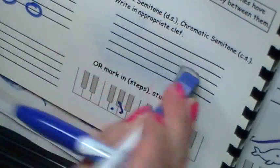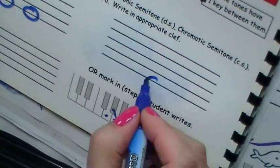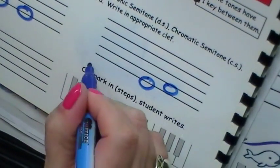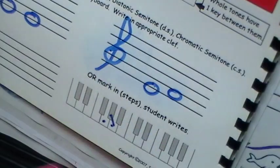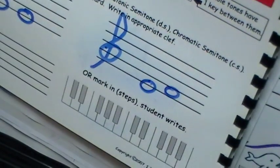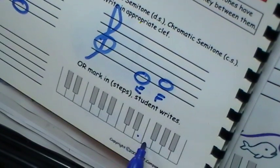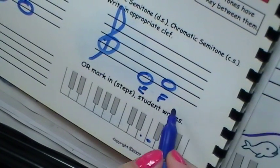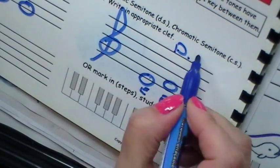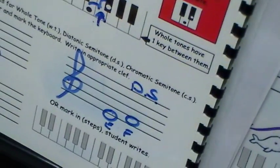Now, very important to see your clef because let's do the same question if it was the treble clef. So if it's the treble clef, this now is E to F. E to F. What do we have? We have a diatonic semitone.